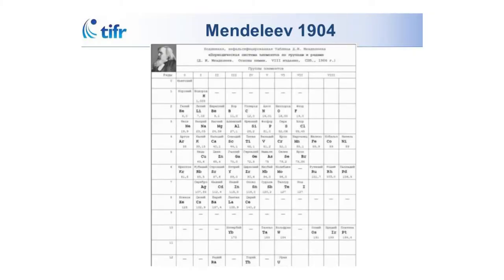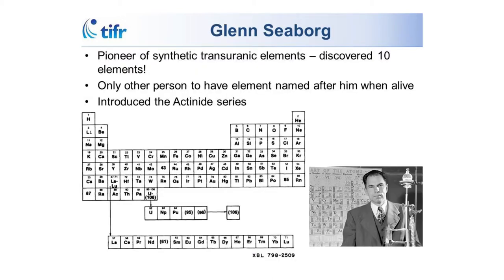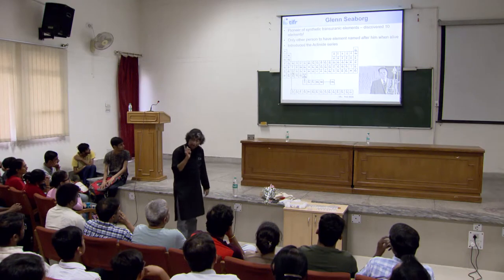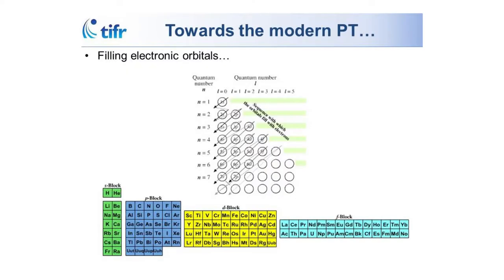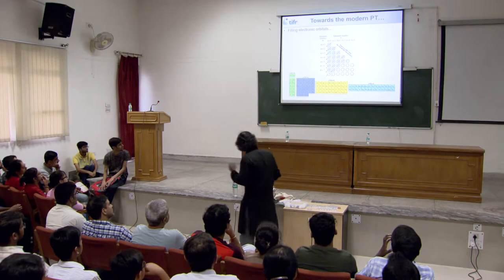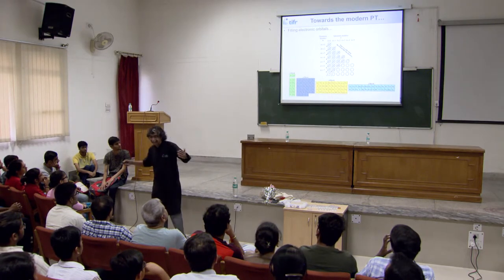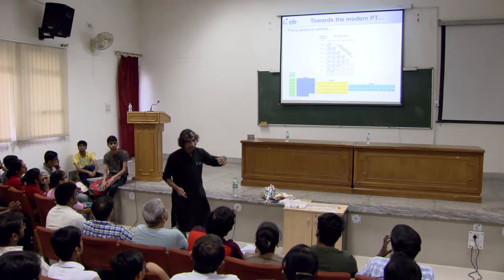This is how Mendeleev's table looks in 1904. Nothing much happens till Seaborg — another pioneer who discovered ten elements with his group. He decides the table is getting too wide and puts the lanthanides and newly found actinides outside, which is why you have them down outside the main table. Seaborg was the only other person to have an element named after him when he was alive. And now we know the modern periodic table with S, P, D, F blocks filled using Hund's rule.